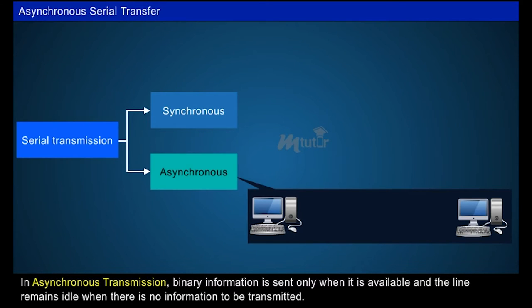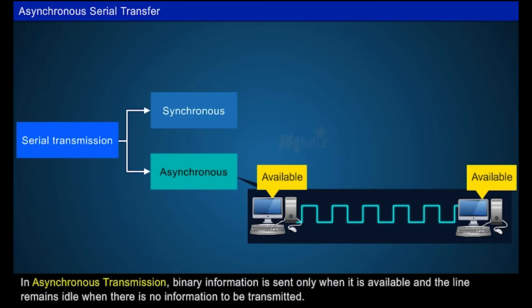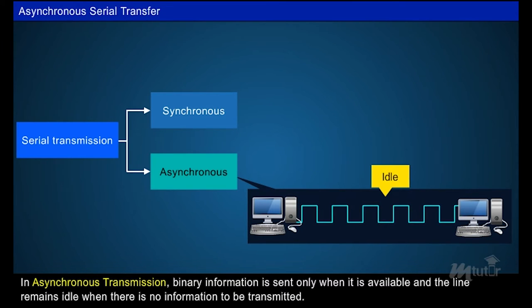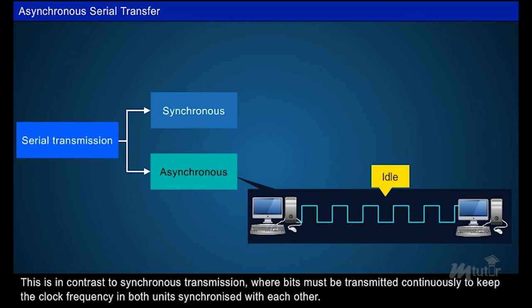Synchronization signals are transmitted periodically between the two units to keep their clocks in step with each other. In asynchronous transmission, binary information is sent only when it is available and the line remains idle when there is no information to be transmitted. This is in contrast to synchronous transmission where bits must be transmitted continuously to keep the clock frequency in both units synchronized.